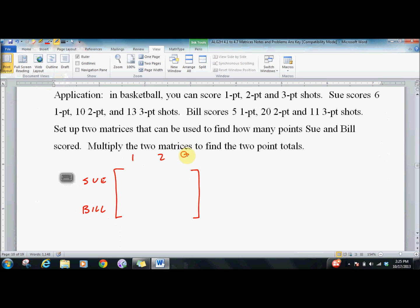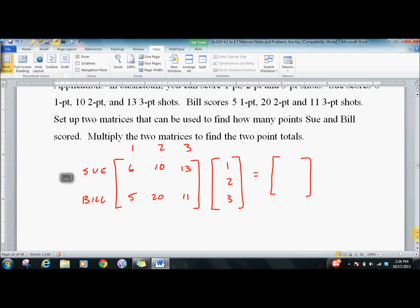And they score baskets lots of different ways. They score one, two, and three point baskets. Sue has got six, ten, and thirteen. Bill has got five, twenty, and eleven. And we know that they're worth one, two, and three points each.